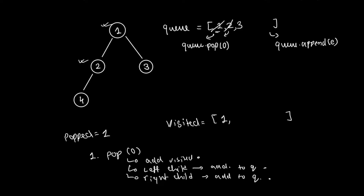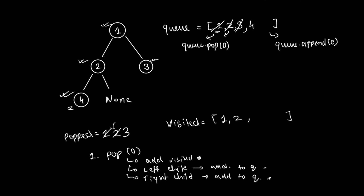Now I repeat — I pop from the front, which is two. I add two to visited. I check the left child — yes, there is a left child, four, so I append it to the queue. I check the right child — it's none, so we do not add it. Next, I pop three. I add three to visited. There is no left child and no right child, so nothing is added to the queue.